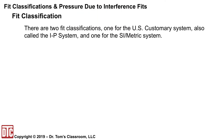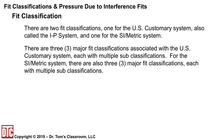Let's first talk about fit classifications. There are really two systems: one for the US customary system, which is also called the IP system, and one for the SI metric system. There are three major fit classifications associated with the US customary system, each with multiple subclassifications. For the SI metric, there are also three major fit classifications, each with multiple subclassifications.